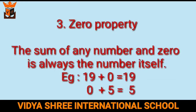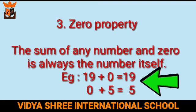The third property is the zero property: the sum of any number and zero is always the number itself. For example, 19 plus 0 equals 19, and 0 plus 5 equals 5. So whenever we add zero to any number, we get the number itself.